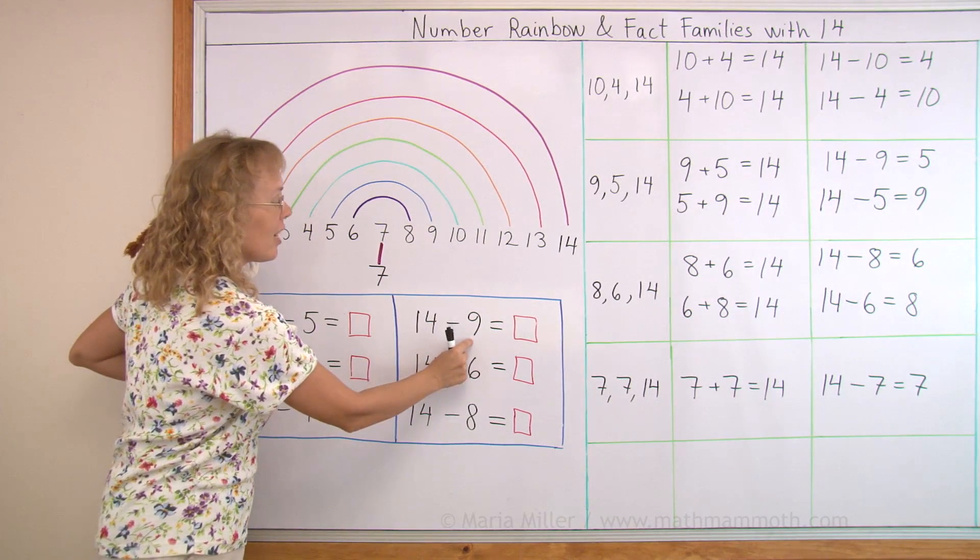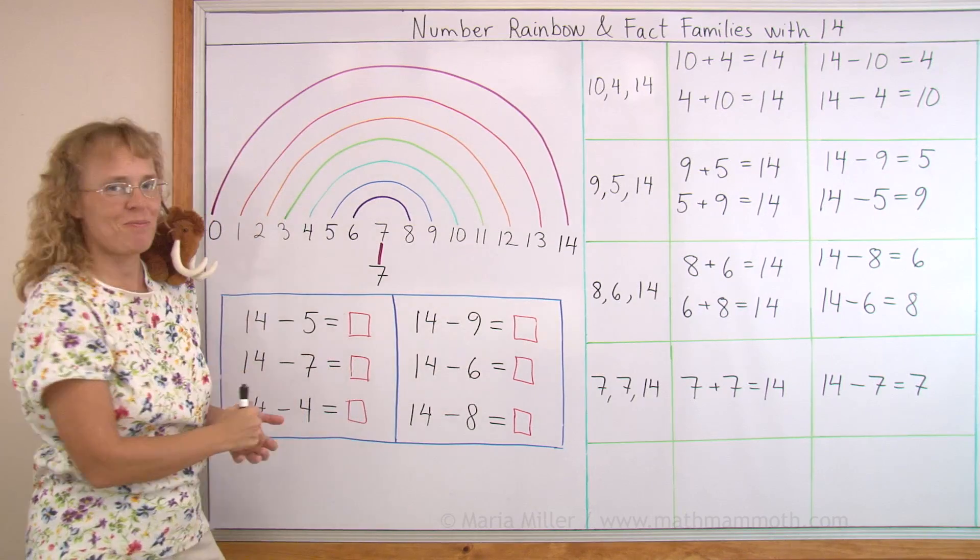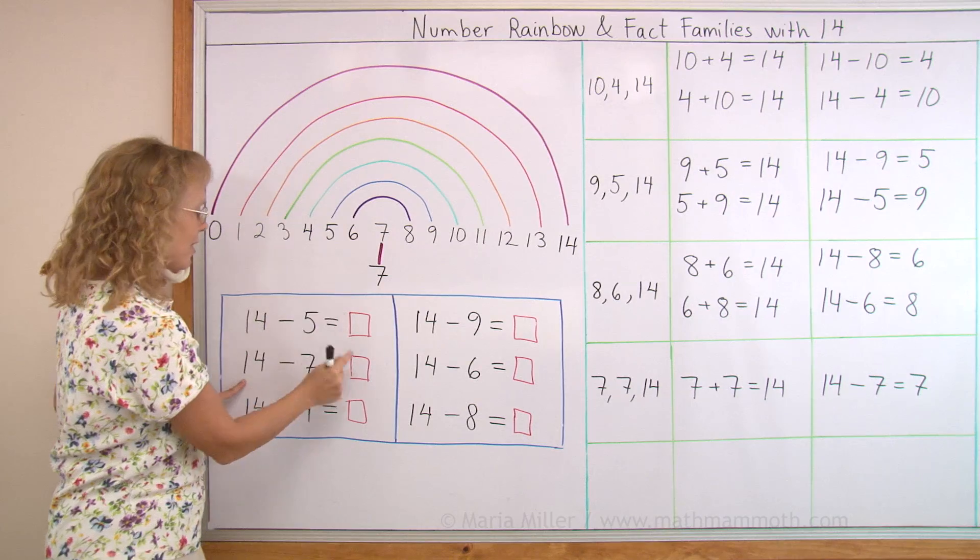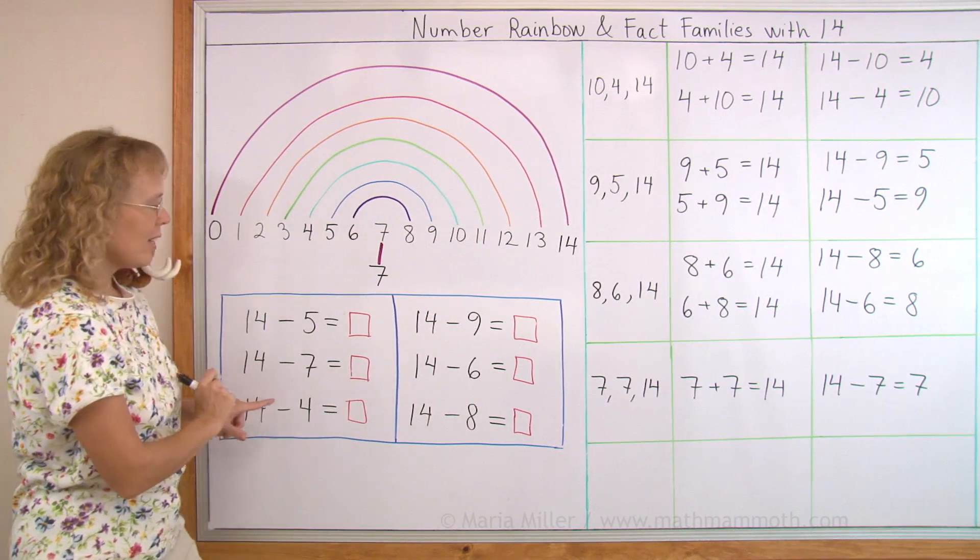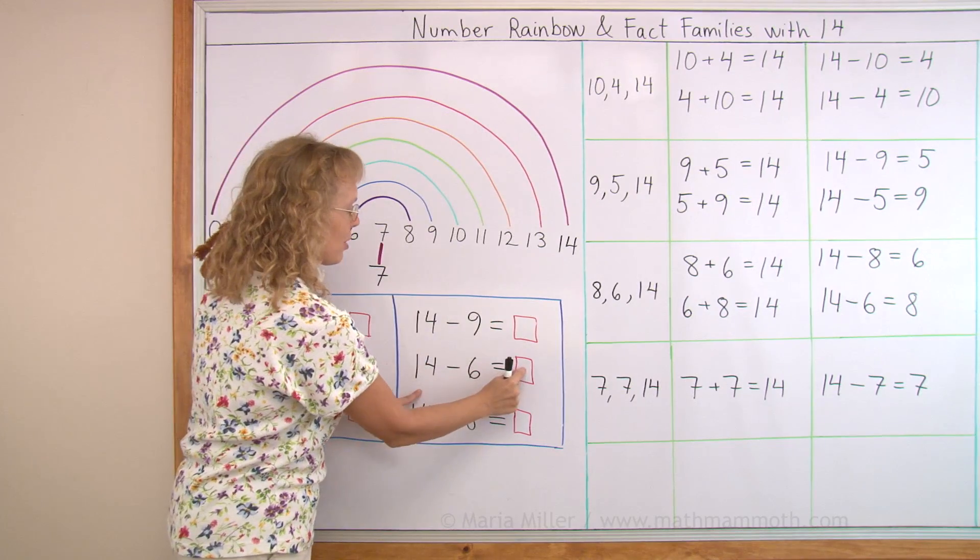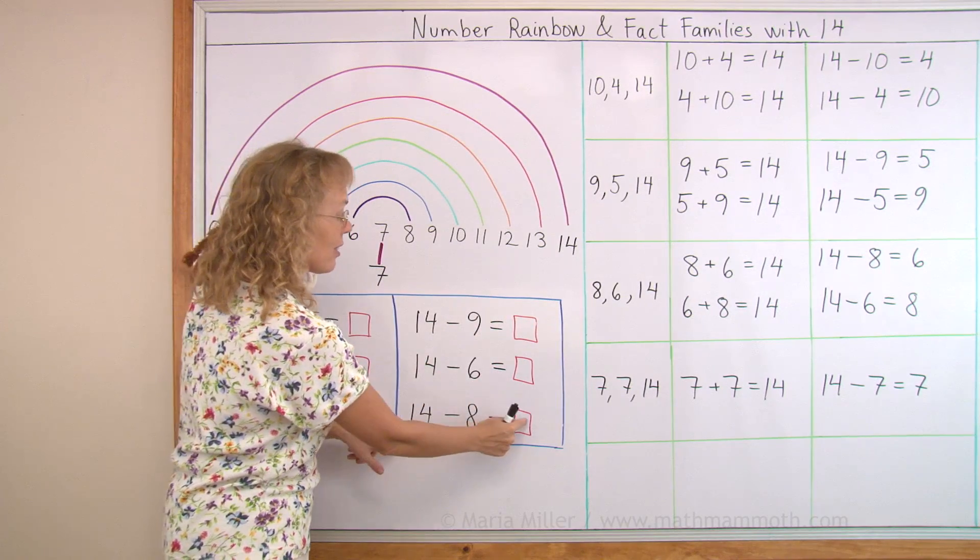9 and 5 make 14. Over here, 9 and 5 make 14. Okay? And 14 minus 7, 7 follow to the other 7. So 7 and 7. 14 minus 6 would be 6 and 8. 8 goes here. And then here's 14 minus 8 equals 6.